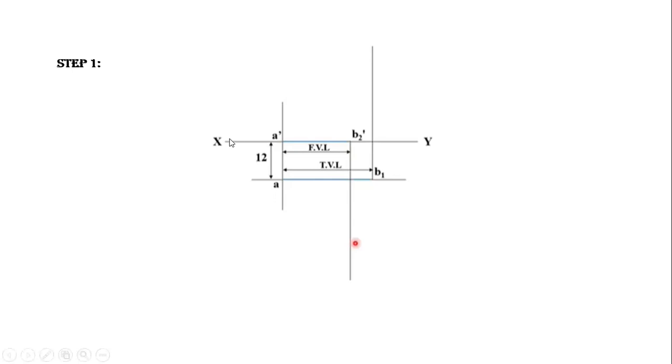The first step: construct a reference line XY on a 2D plane. Mark A and A dash. A dash point is the location of the line A with reference to the front view on the line XY. From A dash bring down the line at a distance of 12 mm in front of the vertical plane and mark this point as A.